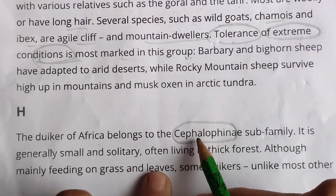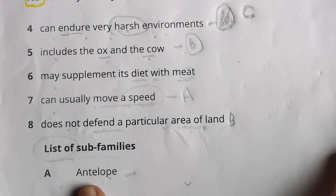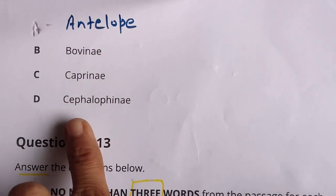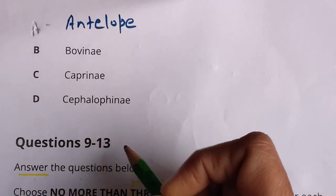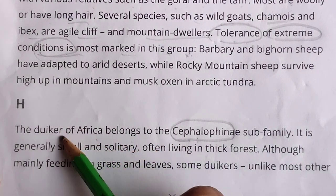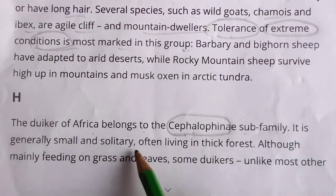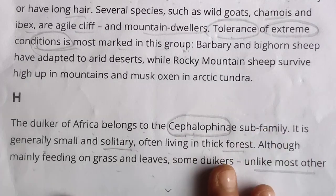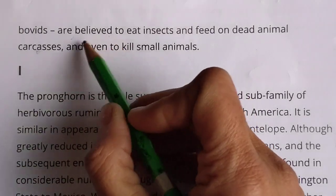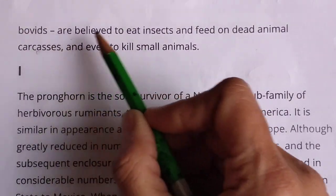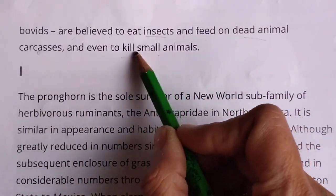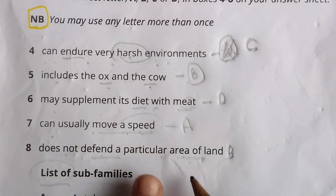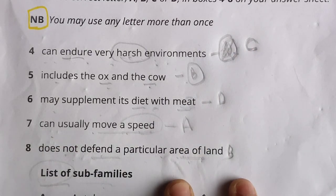Paragraph H: the duiker of Africa belongs to this sub-family. It is generally small and solitary, often living in thick forest, although many feed on grass and leaves. Duikers, unlike most other bovids, are believed to eat insects and feed on dead animals — even to kill small animals. So they may supplement their diet with meat. That matches option D — the characteristic 'may supplement its diet with meat' goes with this sub-family. Now all matching options have been answered.